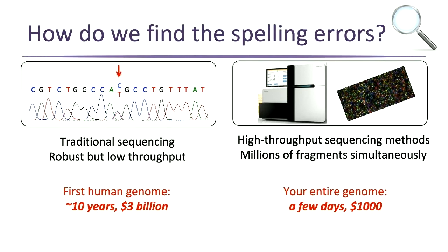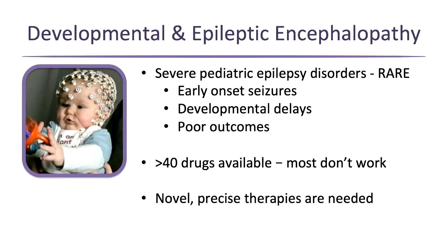We wanted to apply this technology to severe pediatric epilepsies or developmental and epileptic encephalopathies. These are the most severe epilepsies — of the 40 drugs available, most don't work in these kids even on three or four drugs simultaneously. They have very significant developmental delays; some will never walk or talk. There's a desperate need for novel, precise therapies, and understanding the genetics is step one of that process.